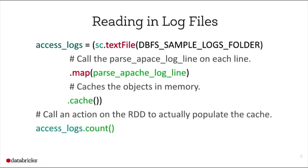In a simple Spark program to read log files, I call a text file command to read in a web log, split it into lines, and call a parse function — parse Apache access log line — using a regular expression to extract the different fields. I then call cache on that RDD to signal it should be stored in memory. Since Spark is lazy, I call a count command on my access logs to get the size and actually populate the cache.